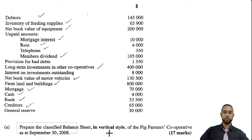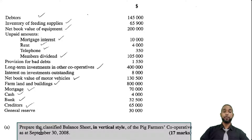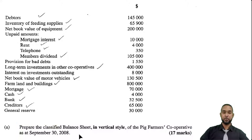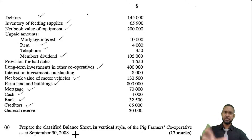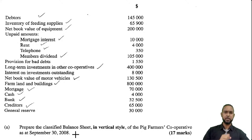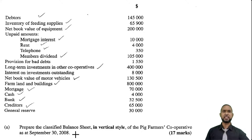Let me just show you what they're asking for. So for 17 marks, prepare the classified balance sheet in vertical style of the Pig Farmers Cooperative as of September 30th, 2008. I'm going to scroll up and zoom in on these balances. Take a pause if you want, read through everything, and decide where you're going to put what, and then I'll take a stab at it.